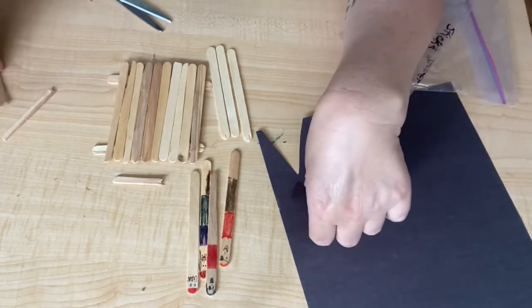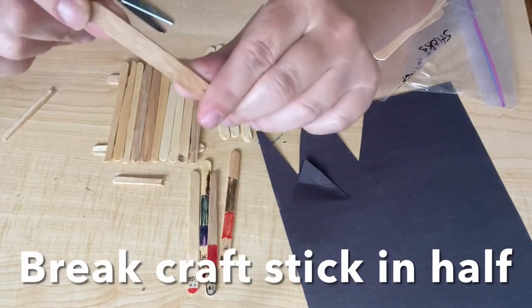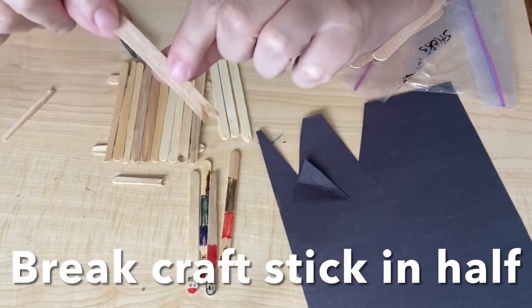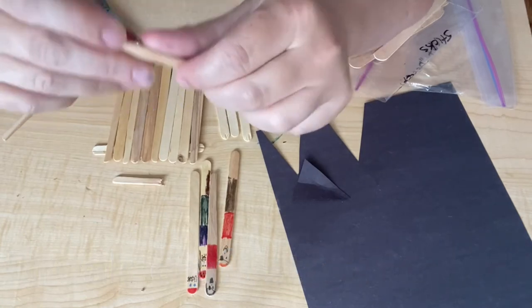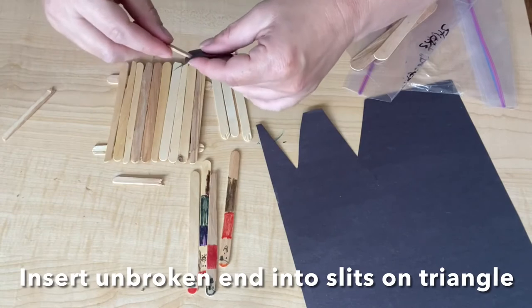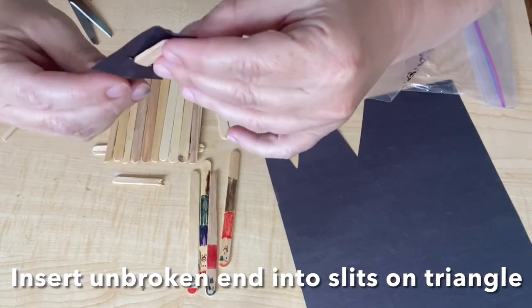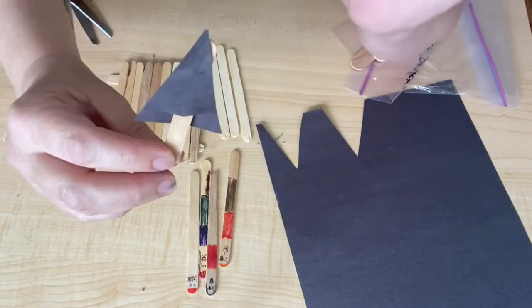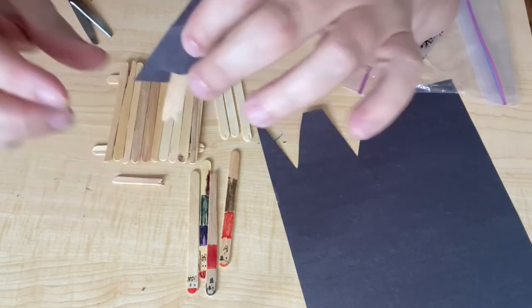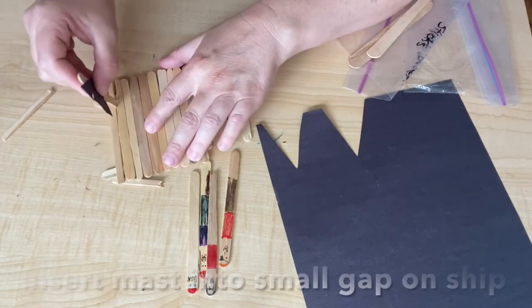So in order to do that you need to take a craft stick and break it in half. Now I already did it with this one. You can just break it and then you're going to put your sail, your triangle, on your craft stick. Here's my sail. My craft stick. I'm going to stick it in here.